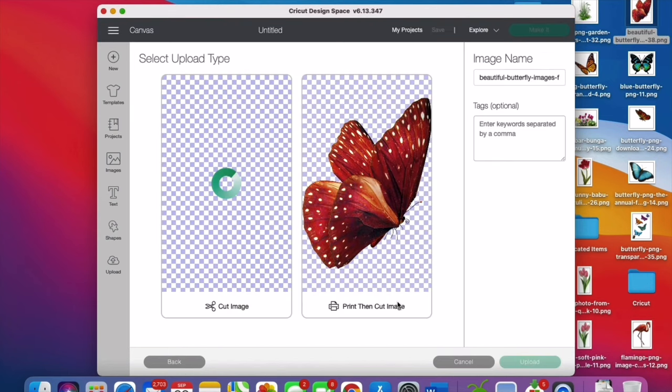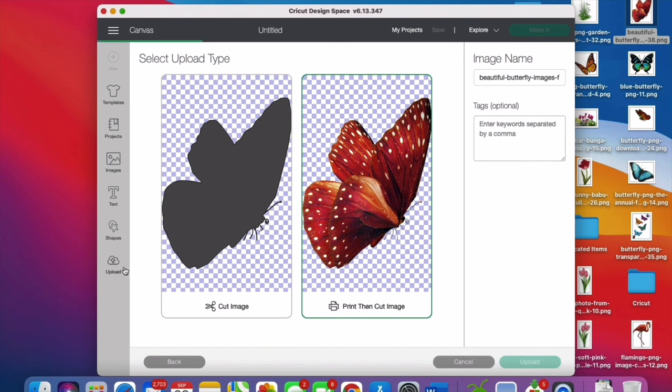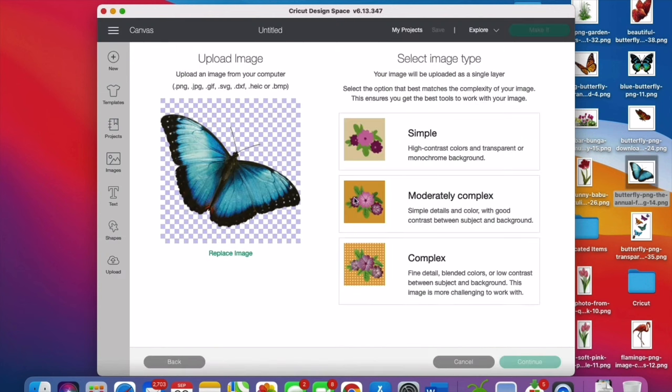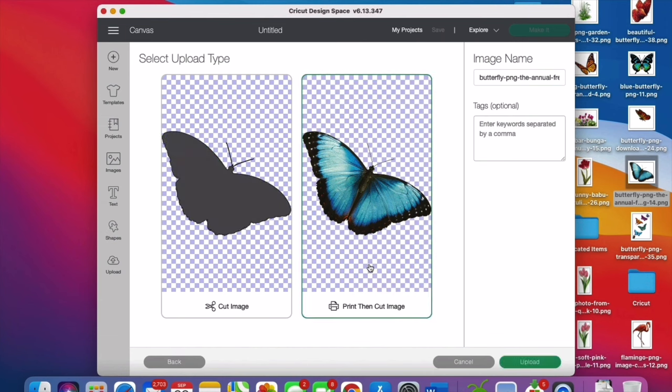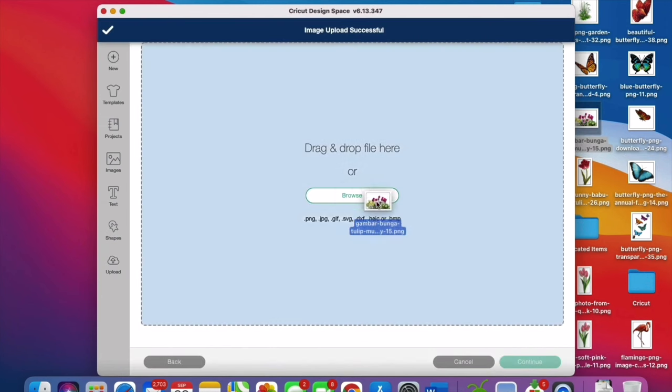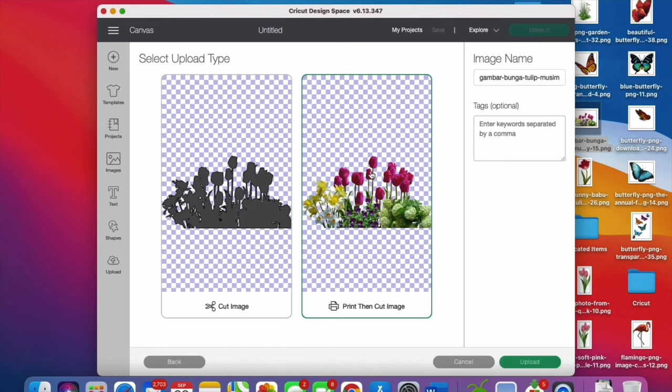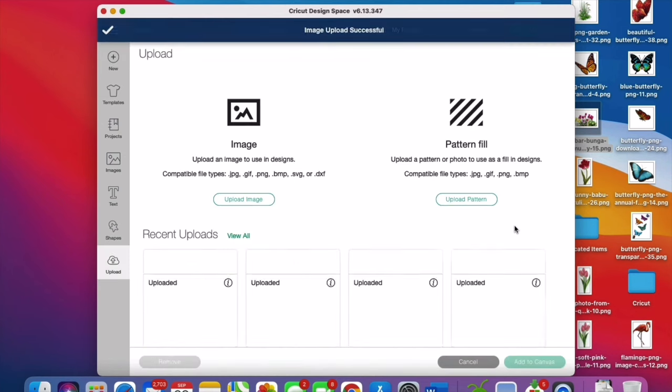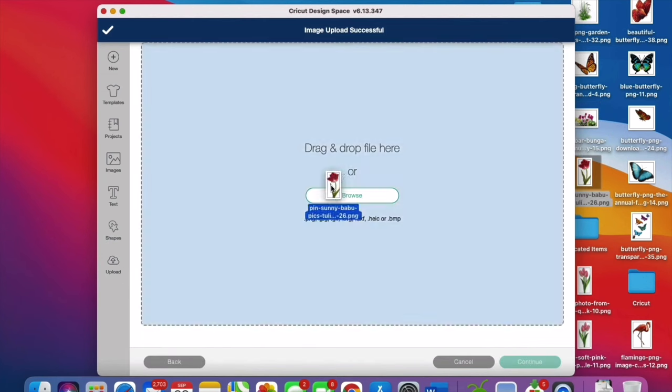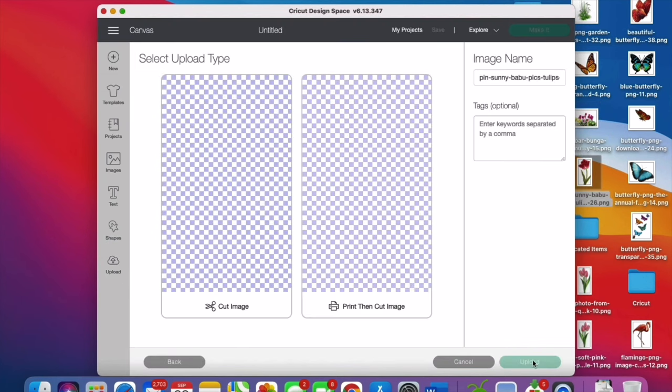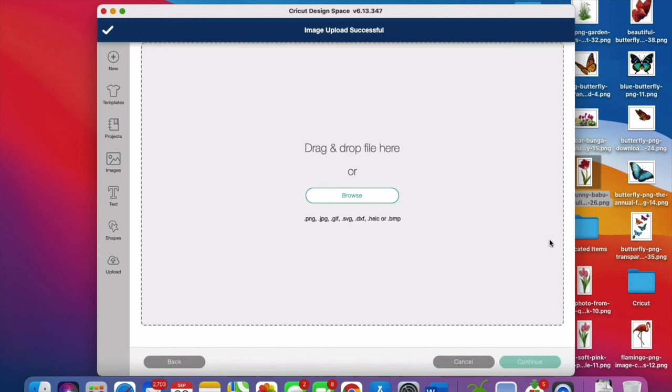Select print then cut image and upload it to the Cricut design space. I will be using these multiple images for this tumbler. These are some beautiful butterflies. Repeat the same process with every image to upload the file into the design space. This is a bunch of tulip flowers, hydrangeas and lily flowers image. I love it so much. I think this is perfect for my tumbler design. Upload it followed by some individual pink color tulips.